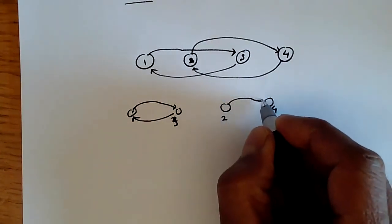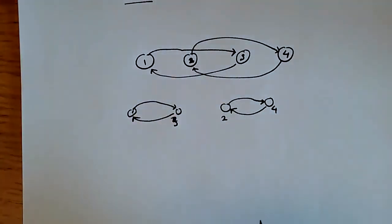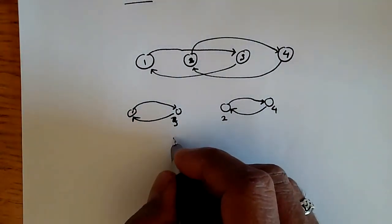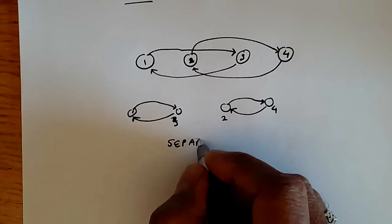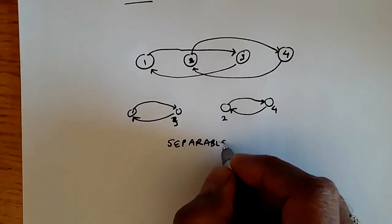These are essentially not talking to each other. And we call, in this situation, we call this a separable stochastic process with separable subchains.